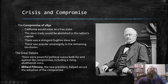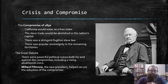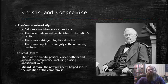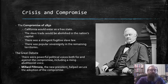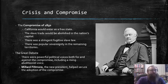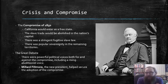By 1850, the debates over the expansion of slavery resulted in the Compromise of 1850. According to this compromise, California would enter as a free state, the slave trade would be abolished in Washington D.C., there would be a new and even more stringent fugitive slave law, and there would be popular sovereignty in the remaining territories. There were powerful political voices both for and against the Compromise, including a rising abolitionist voice completely against this idea — particularly the idea of popular sovereignty, which thus far had been untested and unproven as a policy.